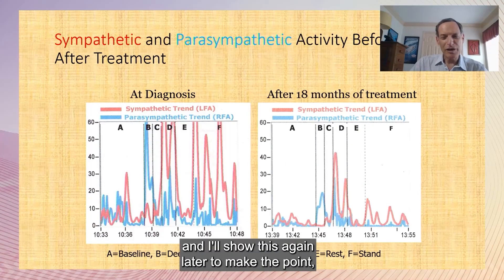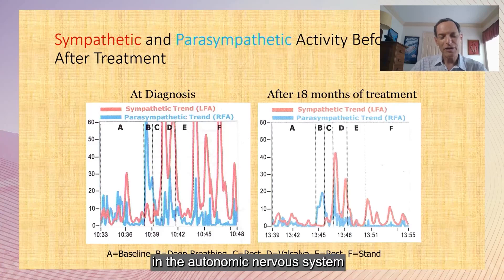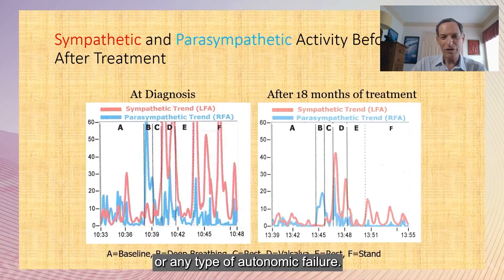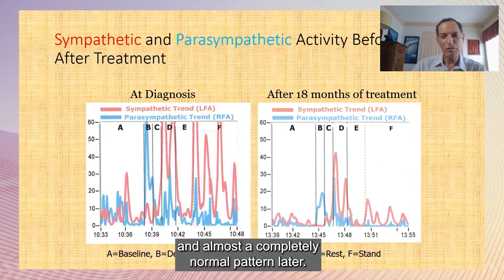This slide makes the point that this type of autonomic dysfunction represents an imbalance in the autonomic nervous system rather than a permanent condition or any type of autonomic failure. In this patient you can see almost a chaotic pattern while she was sick, and almost a completely normal pattern later.